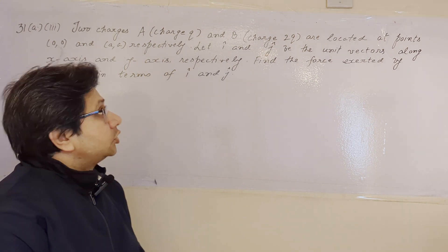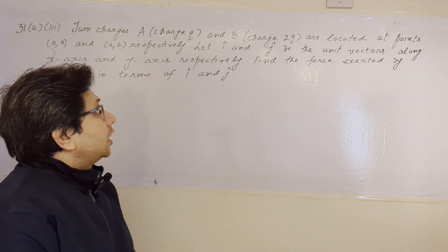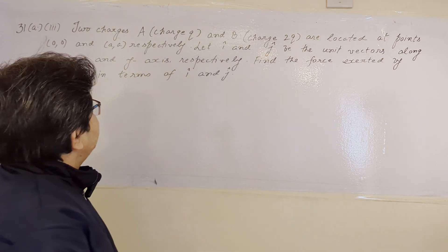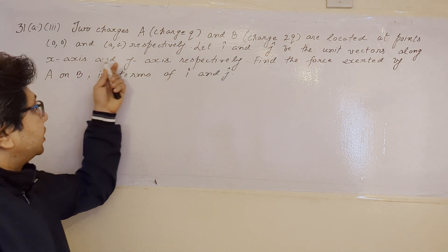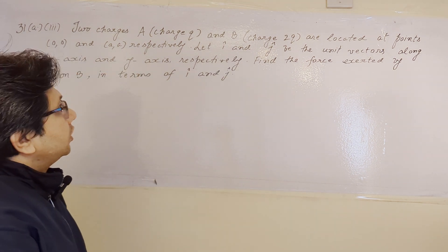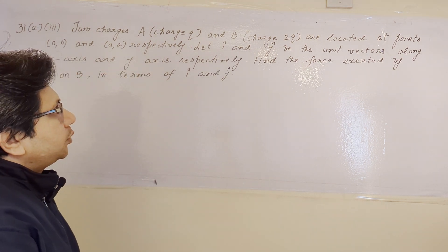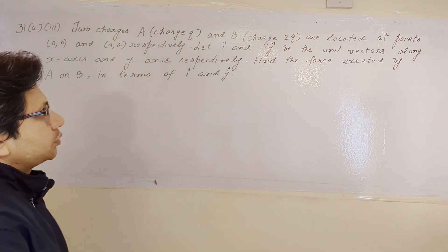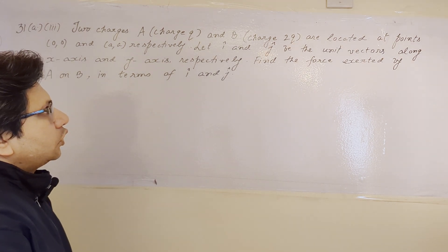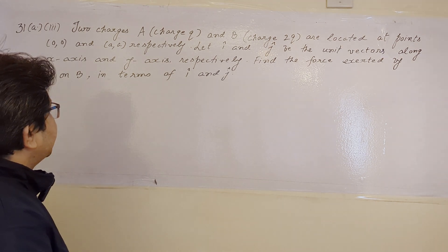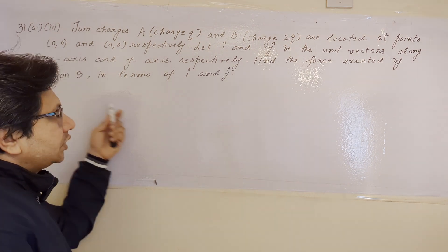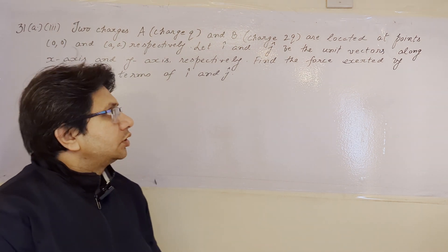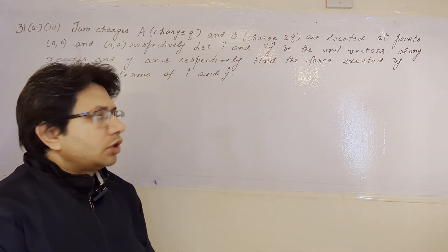Two charges — charge q and charge 2q — are located at points (0,0) and (a,a) respectively. Let î and ĵ be the unit vectors along the x-axis and y-axis respectively. Find the force exerted by charge q on charge 2q in terms of î and ĵ. This problem is based on Coulomb's law in vector form.